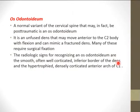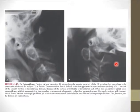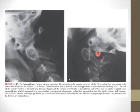Os odontoideum can be a post-traumatic abnormality — an unfused dens that may move anteriorly to the C2 body with flexion and can mimic a fracture of the dens. Radiologic signs of os odontoideum include a smooth, often well-corticated inferior border of the dens and a hypertrophied, densely corticated anterior arch of C1. Recognizing os odontoideum moves the patient from emergency surgery for a fracture to elective surgery to fix the os odontoideum.